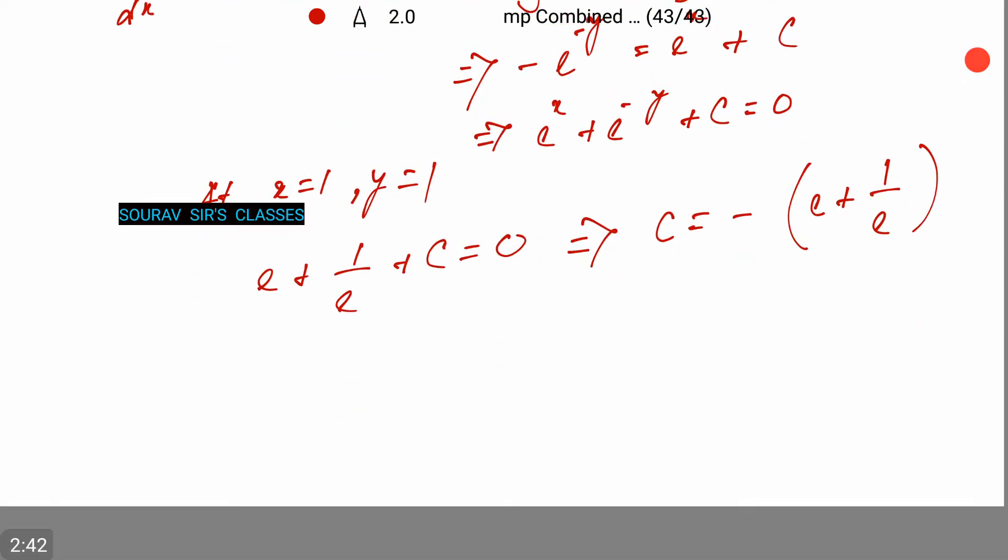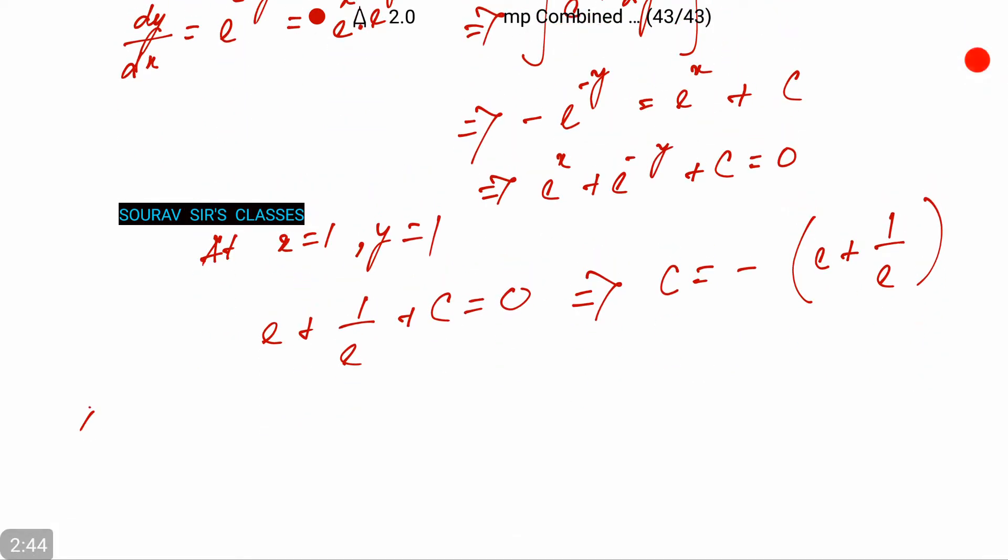Now, at x equals minus 1, we have 1/e plus e to the power minus y minus e minus 1 by e equals 0. We have e to the power minus y equals e, so obviously y equals minus 1. And that is your answer.